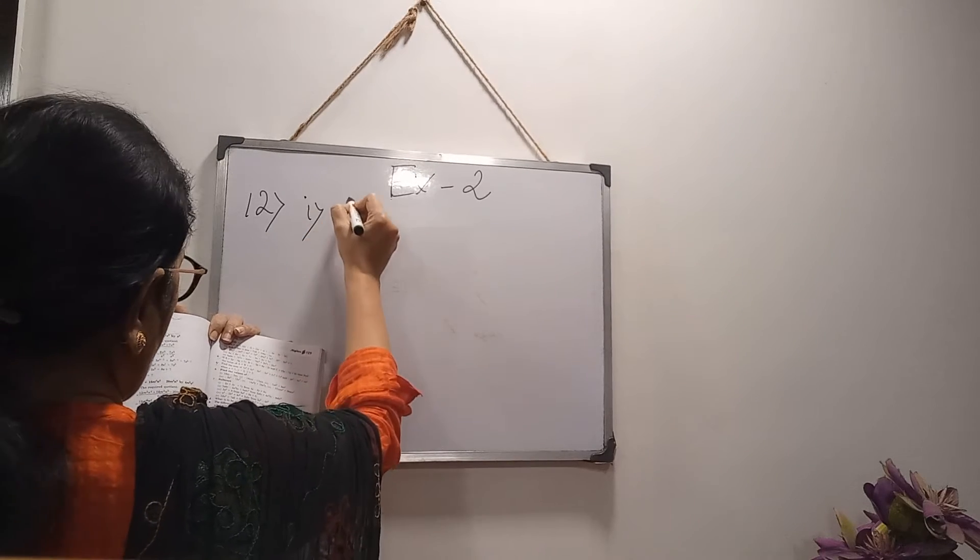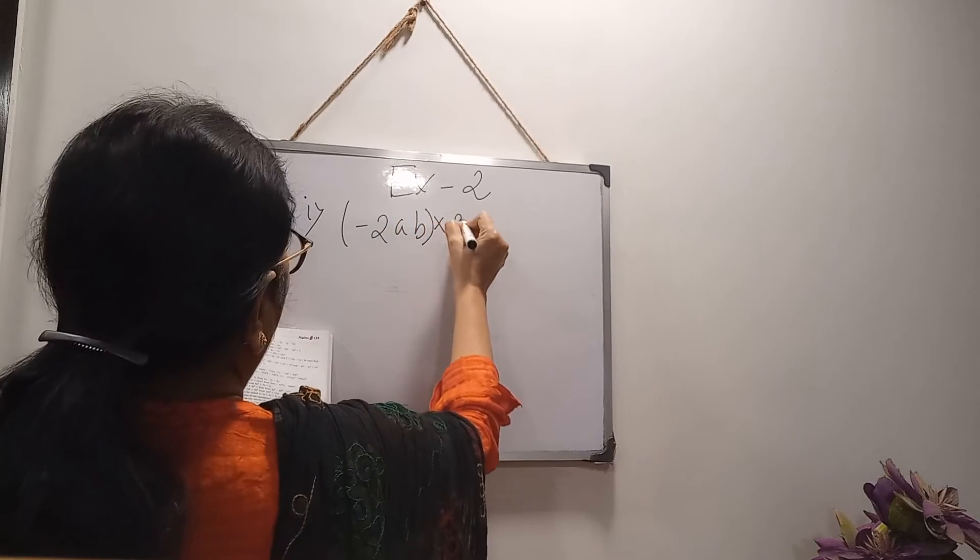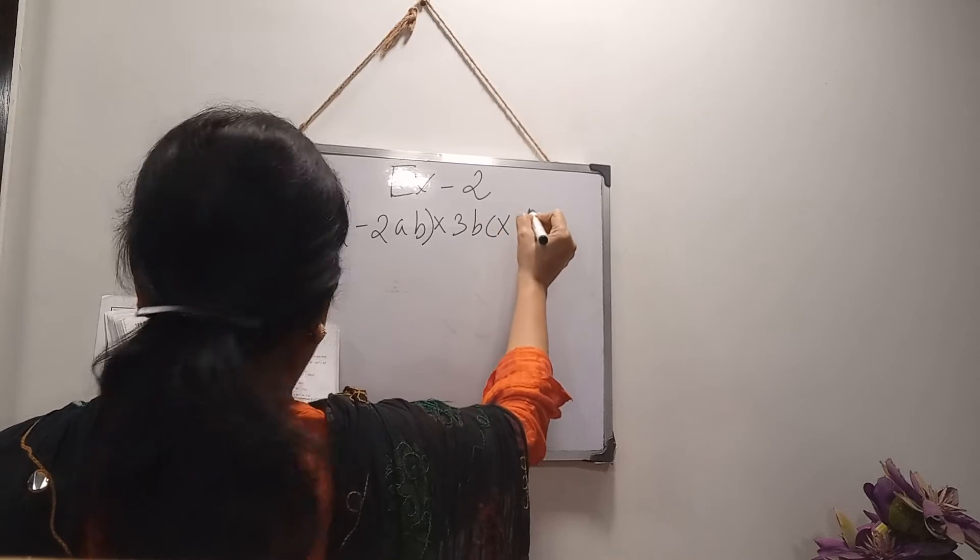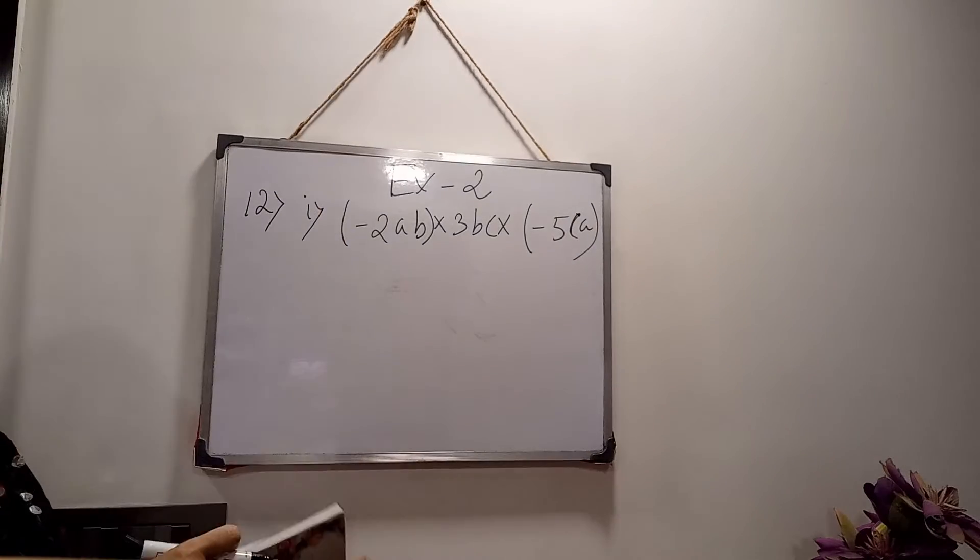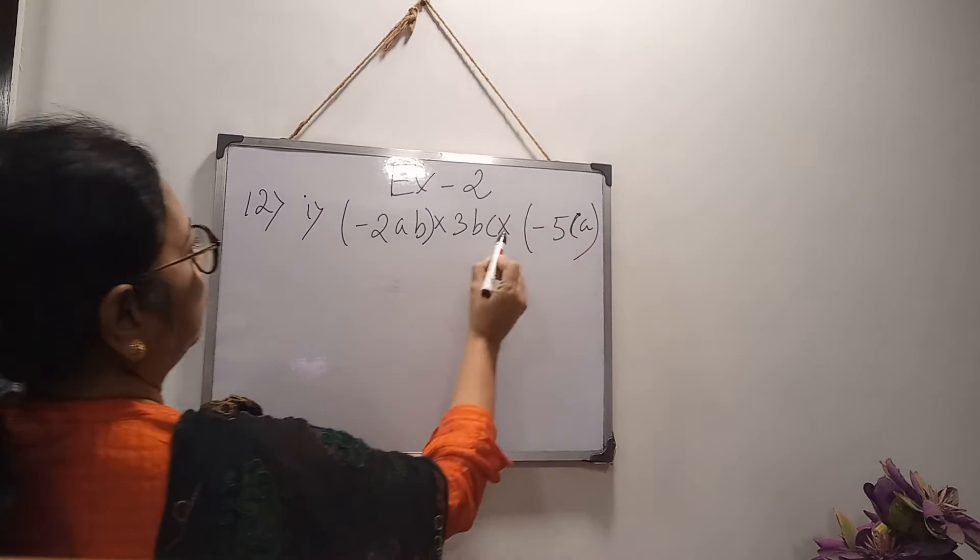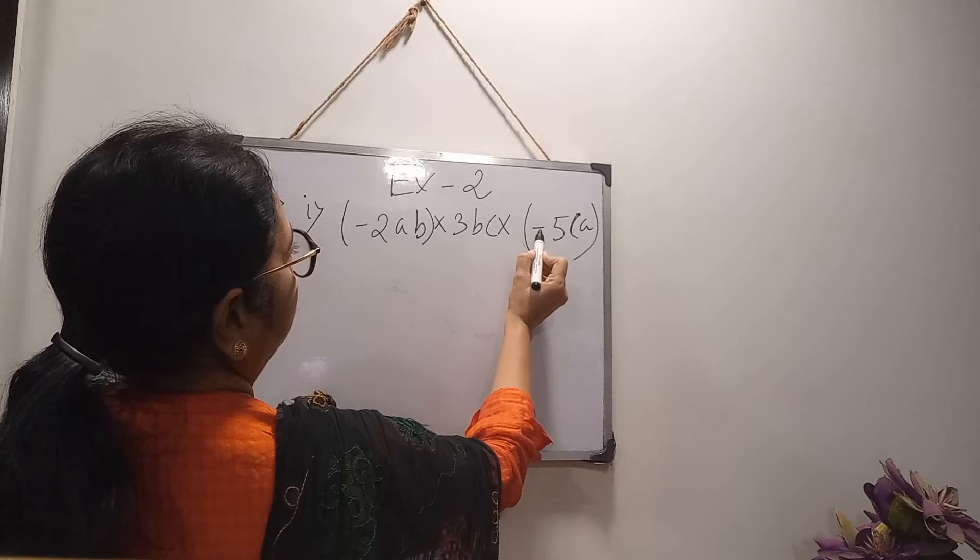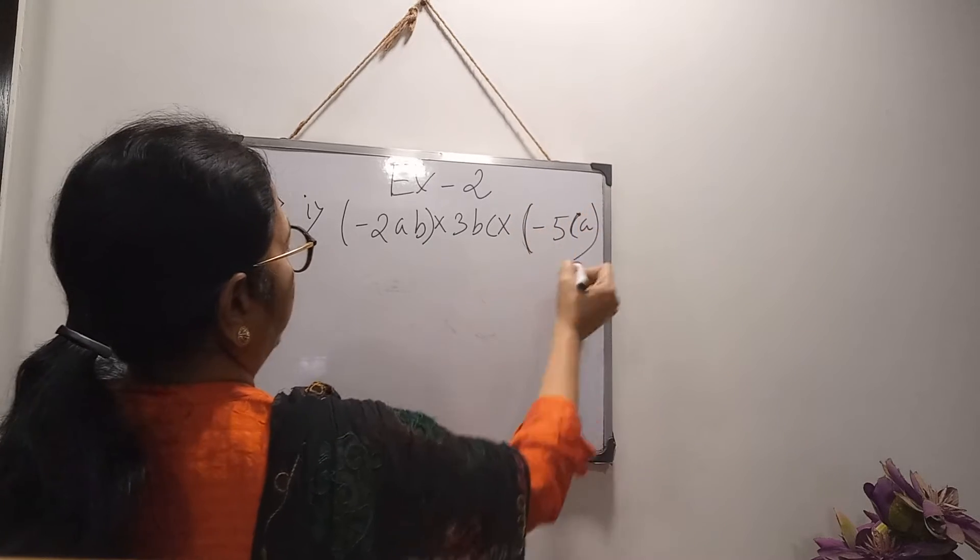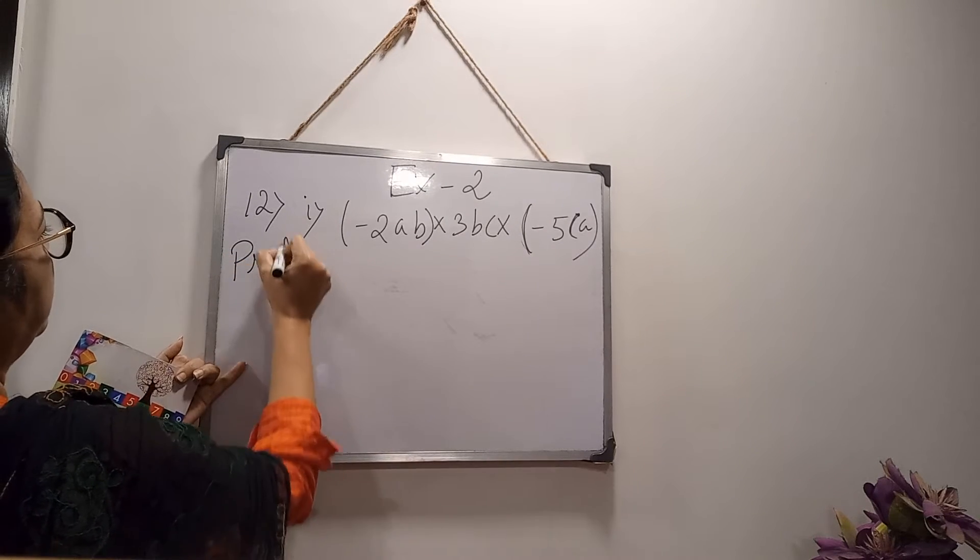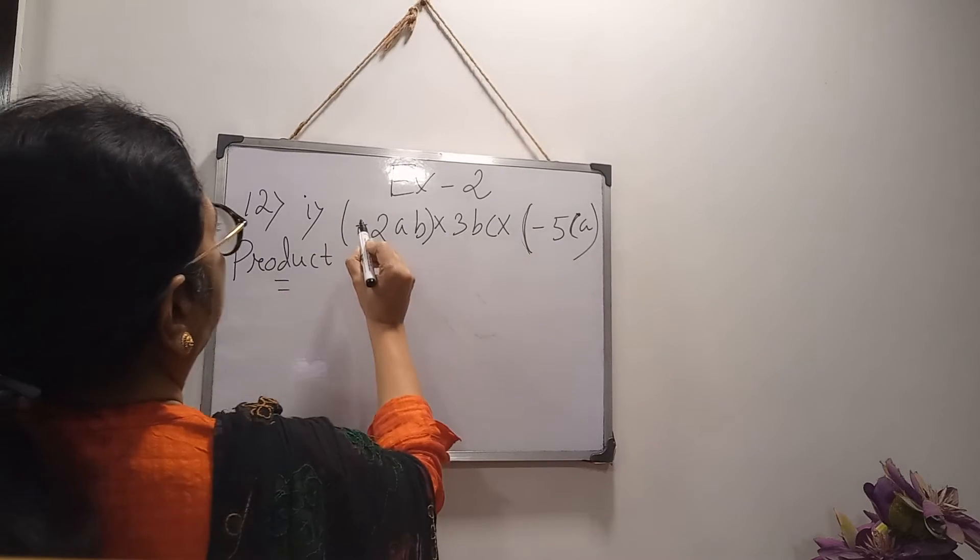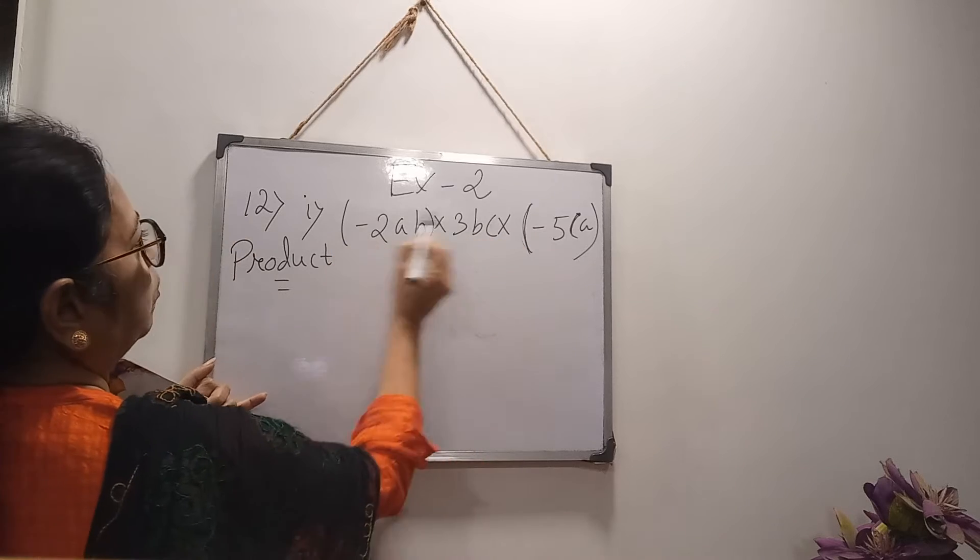Find the product of the following quantities. Sum number 1, it is easy, all of you can do yourself also. So minus 2AB into 3BC into minus 5CA. One thing, when there will be two signs side by side, then always you will give bracket. There is multiplication sign and negative minus sign, so you give one bracket. Now you know product, find the product, so here in answer you have to write down product equals to. Now, minus plus minus, minus minus plus. So minus minus plus.